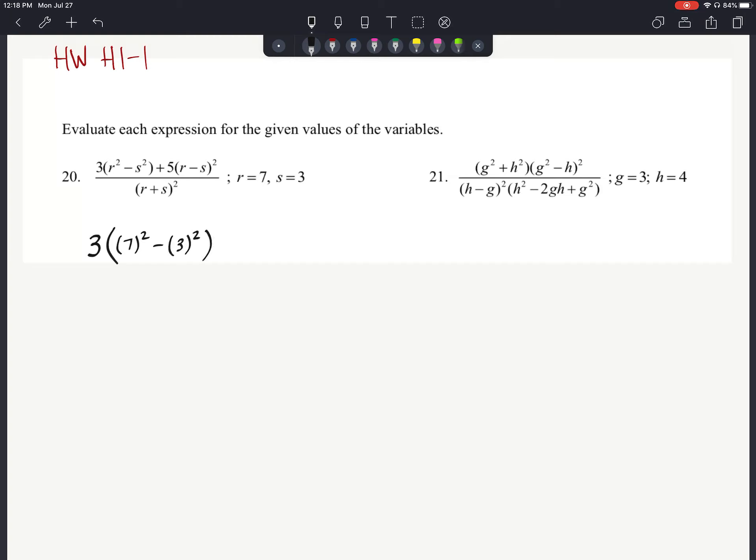And our 49 minus 9, we know right now, this right here is really just 40. So this 49 minus 9 is really just 40. Just to save time, I know you don't want to spend all day on math. So we have 3 times 40 plus 5 times 4 to the second power.